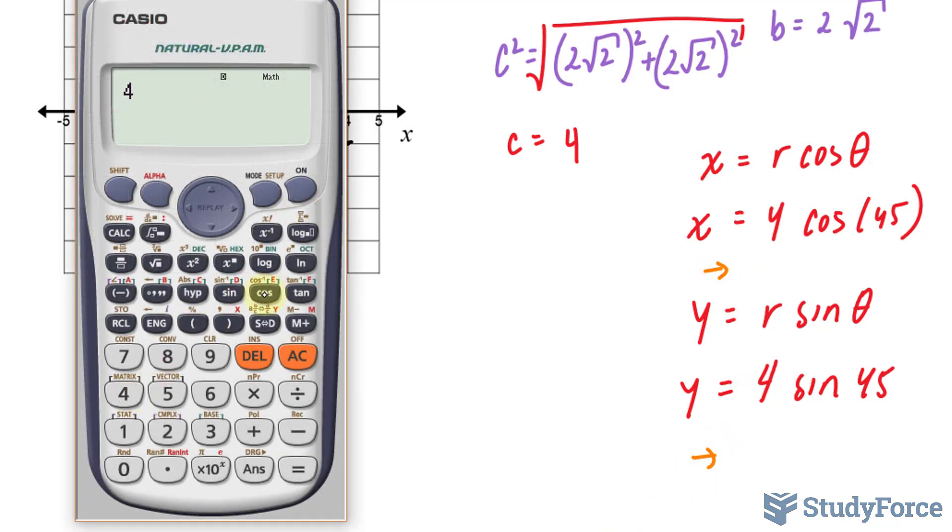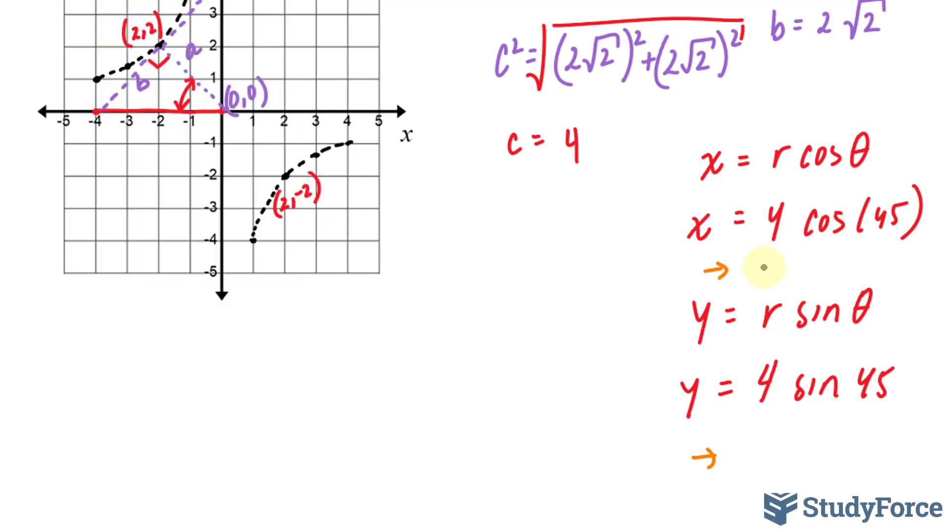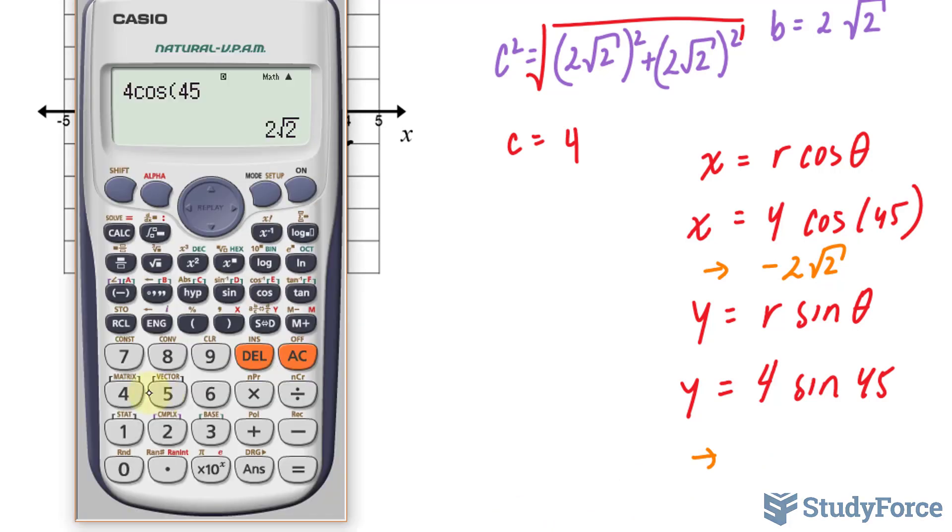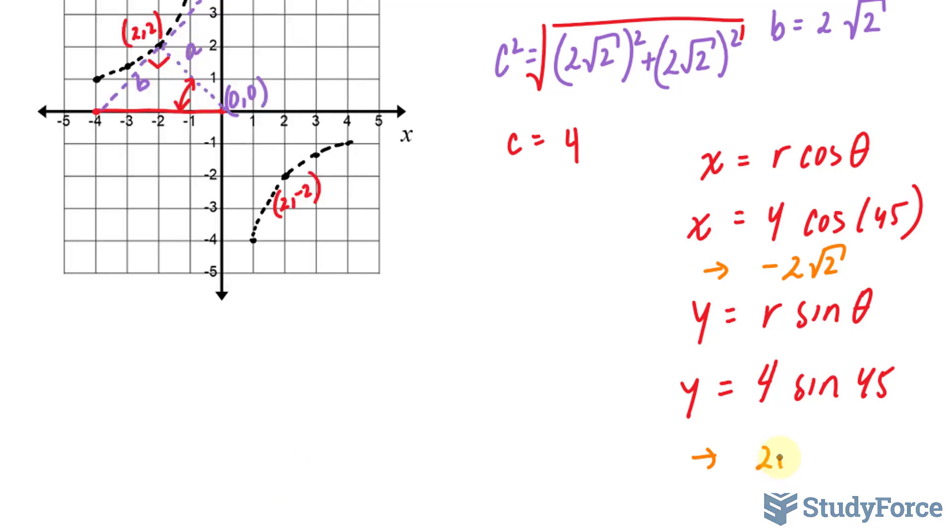4 times cosine of 45. Our x-coordinate will be 2 times the square root of 2. And since it's in the second quadrant, that's negative. Negative 2 times the square root of 2. And our y-coordinate will be 4 times sine of 45. And that gives us positive 2, the square root of 2. We'll leave it that way because sine is always positive here.